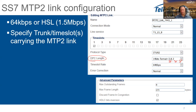For timeslot rate, you choose 64 kbps or 56 kbps. 56 kbps is used when connecting to older switches that have raw bit signaling where one bit is reserved and cannot be used for SS7. You must choose the correct rate; if you use the wrong timeslot rate, the link will not come up.